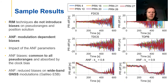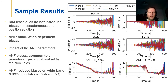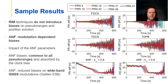In this slide you can see some of the results presented in detail in the paper. In particular, we show that RIM techniques do not introduce biases on the pseudoranges and on the position solution. On the contrary, the adaptive notch filter introduces modulation-dependent biases, meaning that BOC and BPSK signals will be affected differently by this interference mitigation technique. Moreover, the delay introduced by the filter is a function of the filter parameters. Fortunately, the biases introduced by the adaptive notch filter are common to all pseudoranges and are absorbed in the final position solution by the clock bias term. When the adaptive notch filter is used for processing wide band GNSS modulations, lower biases are observed compared to the other signals.